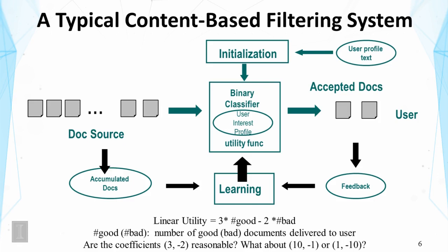One commonly used strategy is a utility function. For example, a linear utility function could be defined as 3 multiplied by the number of good items delivered, minus 2 multiplied by the number of bad items delivered. Think of it like a gambling game — deliver a good item and you gain $3, deliver a bad one and you lose $2. This utility function measures how well the system performs overall.